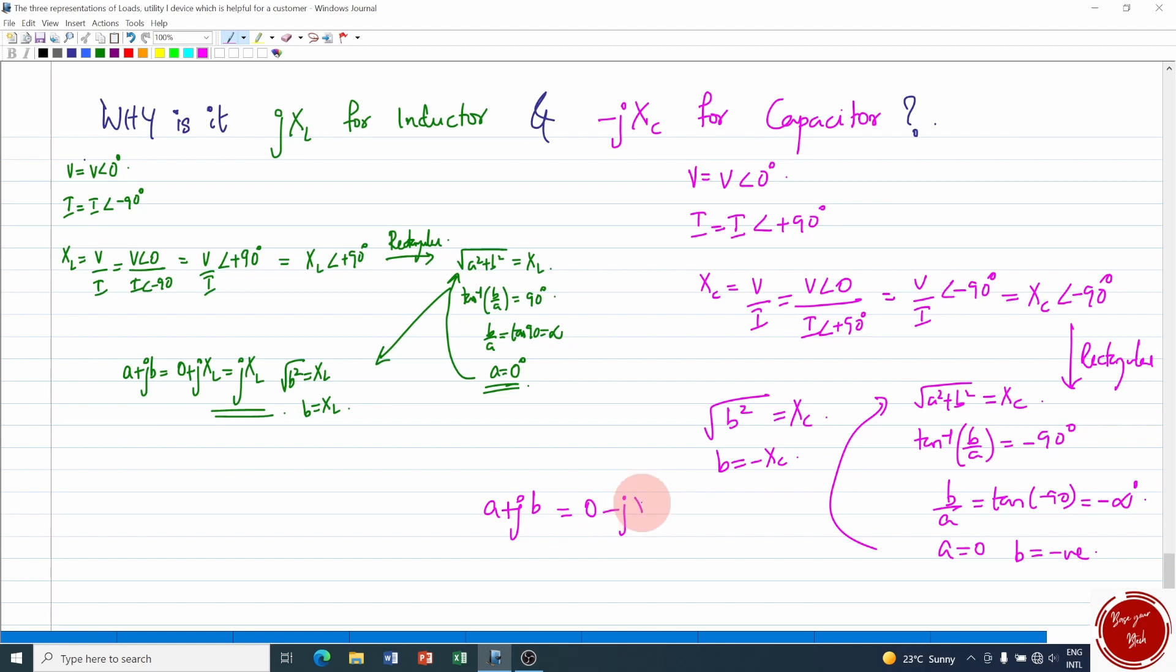So this is why always in a circuit if an inductor is there it is written plus jXL value and if a capacitor is there it is negative jXC value. Hope it's clear now. Stay tuned for more videos. Thank you.